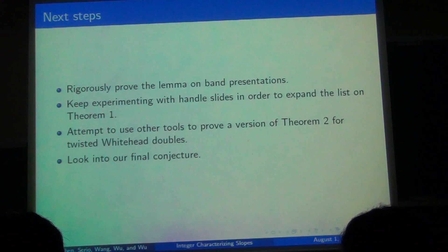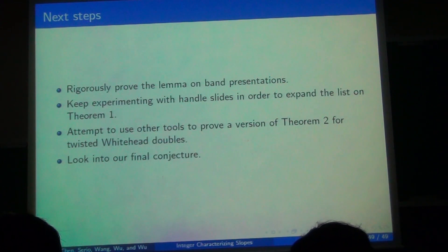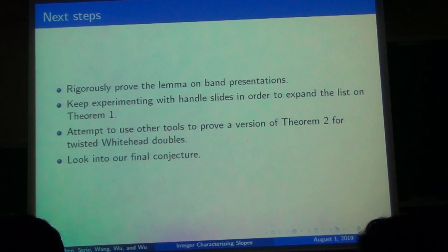So what is next now is to rigorously prove the lemma for band representation, as Cecilia mentioned, for theorem two because we have the sketch of the proof, but we don't have a rigorous definition of band presentation in order to write it down. We have to keep experimenting with handle slides in order to expand the list of theorem one because some of those knots are actually very important. And maybe use other tools to prove a version of theorem two for the remaining knots and then look for further directions.